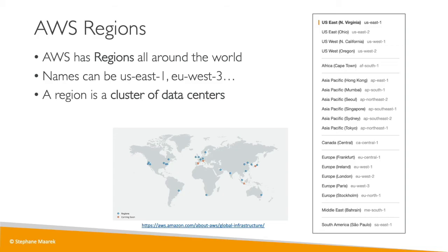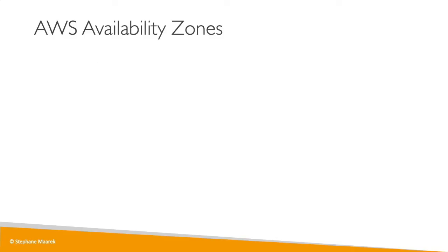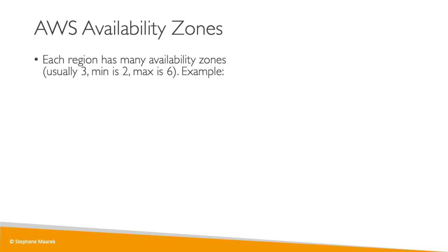When we use AWS services, most services are linked and scoped to a specific region. That means if we use a service in one region and try to use it in another region, it will be like using the service for the first time.